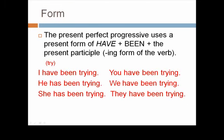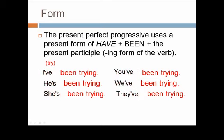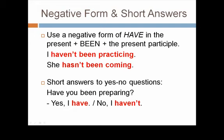Let's talk about form. The present perfect progressive uses a present form of have, plus been, plus the present participle, which is the ing form of the verb. Let's use try as our example. Remember that contractions are very common in everyday English. I've been trying. To form the negative, use a negative form of have in the present, plus been, plus the present participle. For example, I haven't been practicing. She hasn't been coming. To form short answers to yes-no questions, remember to use the first auxiliary verb. Have you been preparing? Yes, I have. No, I haven't.